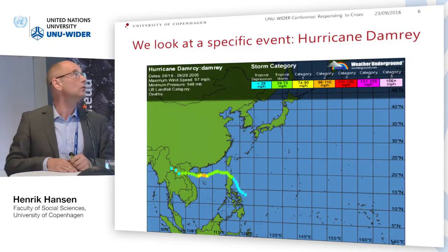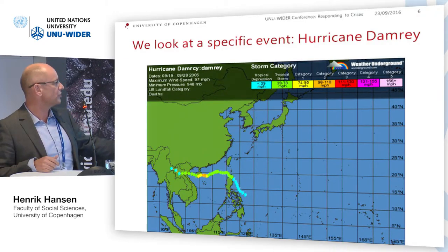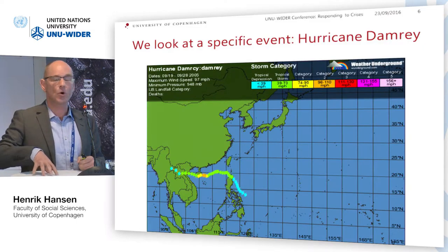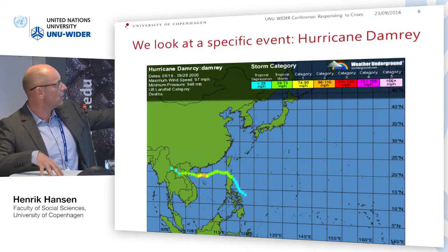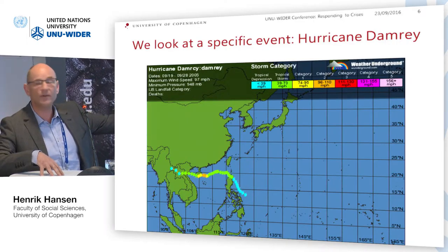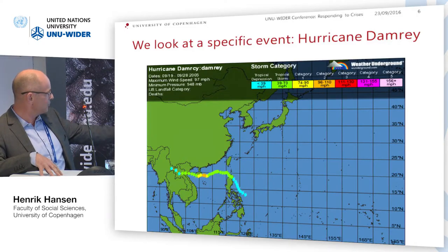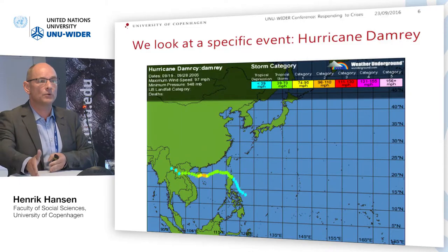As a typhoon or tropical storm emerges in Southeast Asia, the Japanese Meteorological Agency provides early warnings and tracks all typhoons and hurricanes. Storm categories range from mild tropical depression to tropical storm, then categories one through five where it becomes truly serious. You can see from the trajectory that Damrey was a tropical storm — it hit a Chinese island and then moved into Vietnam, and our interest is the impact of what happened there.